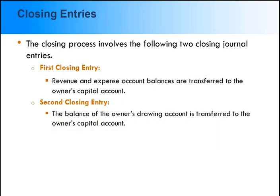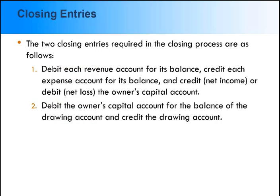The closing process involves two closing journal entries. In the first closing entry, all the revenue and expense account balances are transferred to the owner's capital account. In the second closing entry, the balance of the owner's drawing account is transferred to the owner's capital account. The two closing entries involve revenue, expense, and owner's capital accounts. Closing entries are recorded immediately following the adjusting entries.